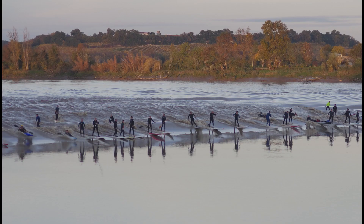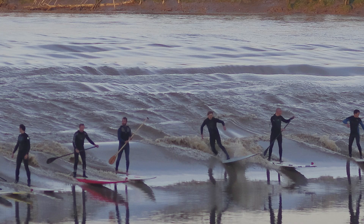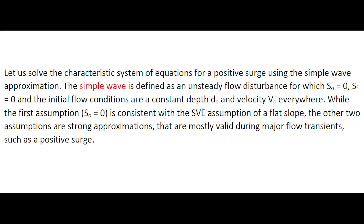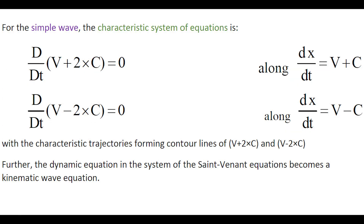This photograph presents another illustration of the positive surge of the tidal bore of the Dordogne River. Let us solve the characteristic system of equations for a positive surge using the simple wave. The simple wave is defined as an unsteady flow disturbance for which the bed slope S0 is zero, the friction slope SF is zero, and the initial flow conditions are a constant depth d-naught and a constant velocity v-naught everywhere. For a simple wave, the characteristic system of equations can be simplified as shown here.